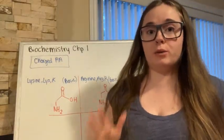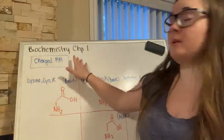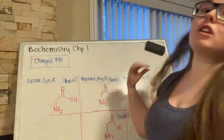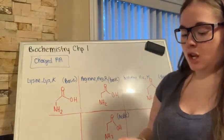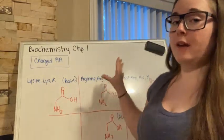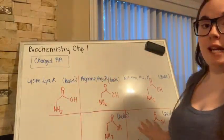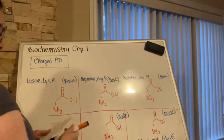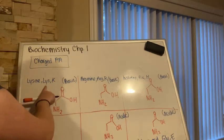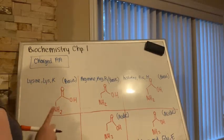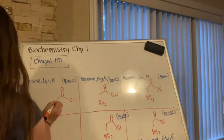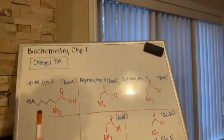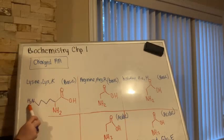Now here is our last group of amino acids — our charged amino acids. You'll have positively or negatively charged amino acids due to their side chains being acidic or basic. The first basic amino acid is lysine. Lysine has L-Y-S as its three-letter abbreviation and K as its one-letter abbreviation.